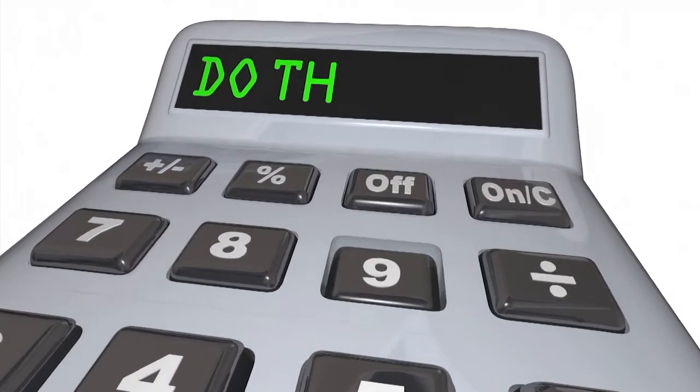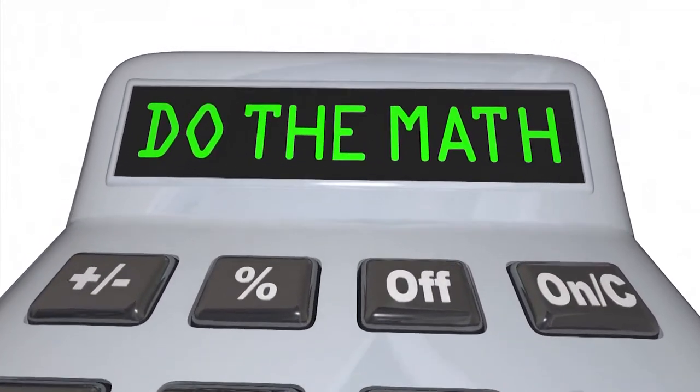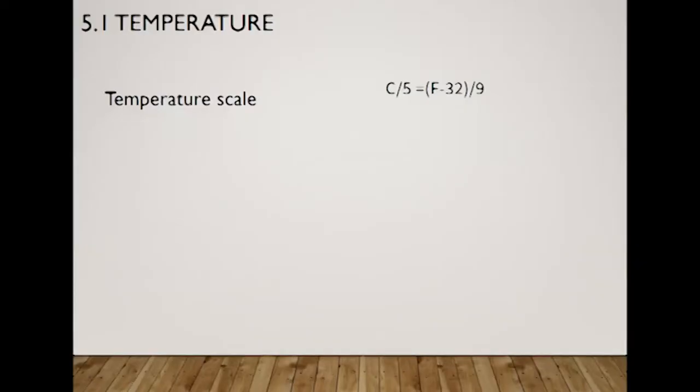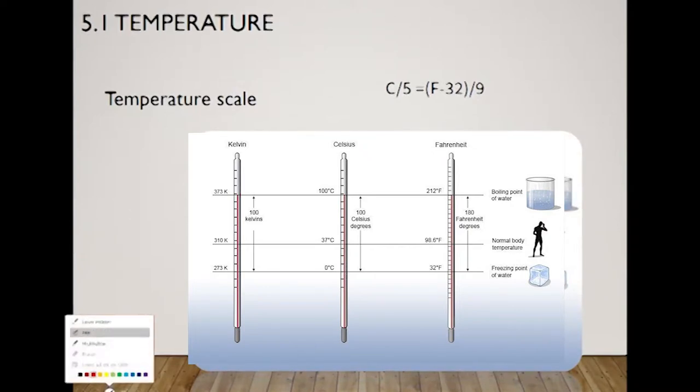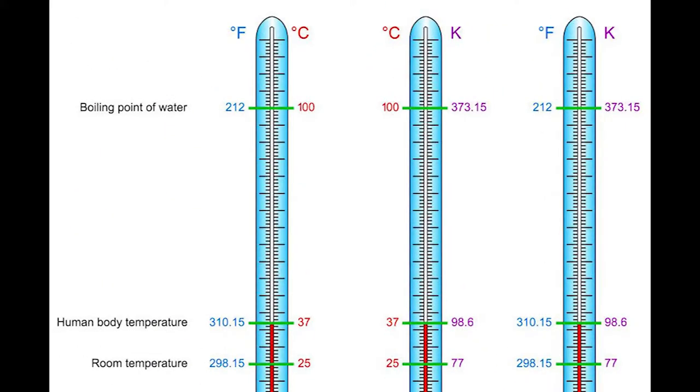Now we're going to talk about temperature scales. As you can see in the right corner, there is a connection between temperature in Celsius and Fahrenheit. That scale will help us understand the correlation between Celsius and Fahrenheit. The equation is this one here. As you see, C divided by 5 equals F minus 32 divided by 9.